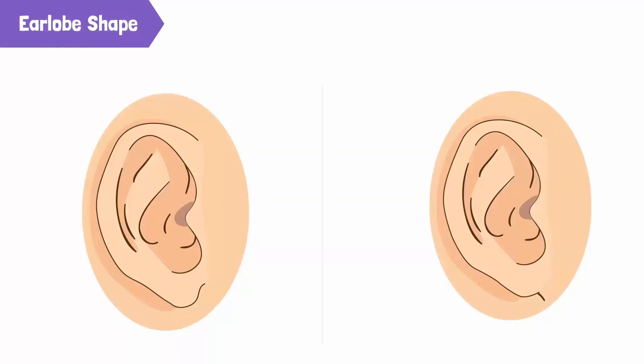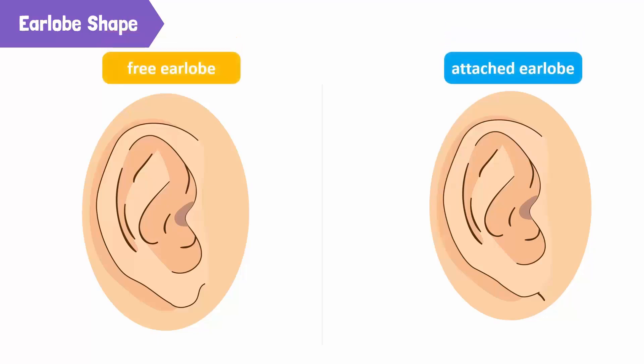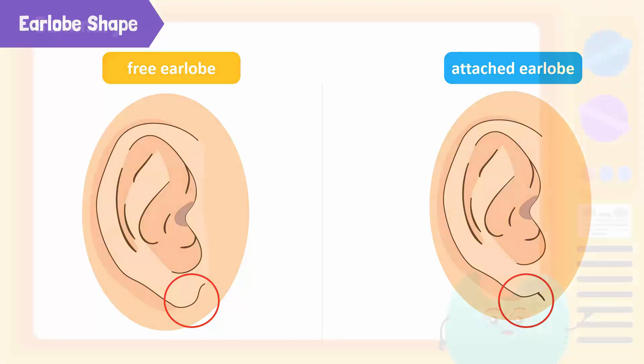Next are earlobes. In humans, earlobes are of two types: free earlobes and attached earlobes. Free earlobes are those that hang below the point of attachment to the head. Attached earlobes are attached directly to the side of the head.